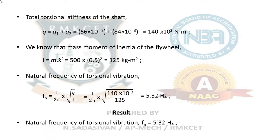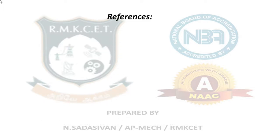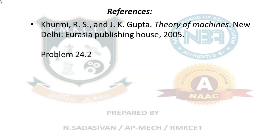The result: the natural frequency of torsional vibration, fₙ = 5.32 Hz. This is taken from your Rao textbook, problem 24.2.